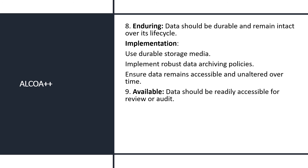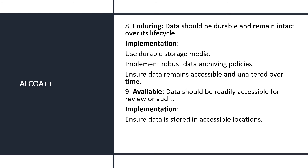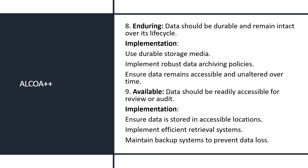The ninth attribute is Available. Available means data should be readily accessible for review or audit — accessible for review and audit for the lifetime of the record. For implementation: ensure data is stored in accessible locations, with only authorized persons having access. Implement efficient retrieval systems so data can be arranged and retrieved as needed. Maintain backup systems to prevent data loss so that in the event of loss from the current location, data can be easily recovered.